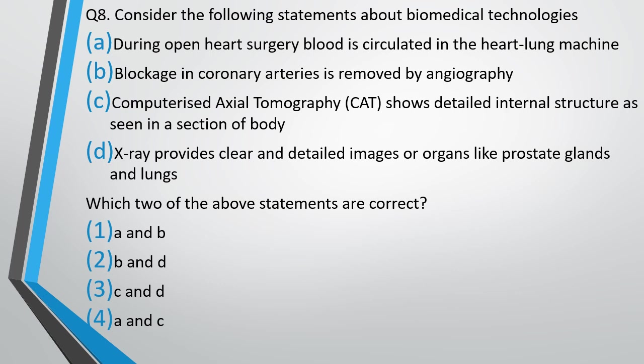The X-ray provides a clear and detailed image of organs like the prostate gland and lungs. You have to identify which two of the four statements are correct. Options are A and B, B and D, C and D, or A and C. The correct answer is option 4 — the first and third statements. During open heart surgery, blood is circulated in a heart-lung machine. Computerized axial tomography shows detailed internal structure as seen in a section of the body. So statements A and C are correct.